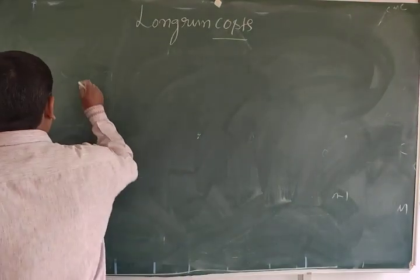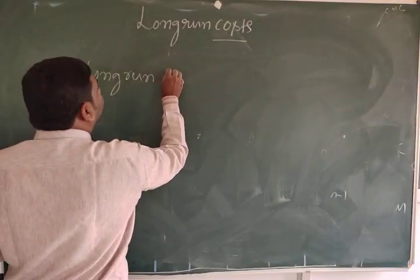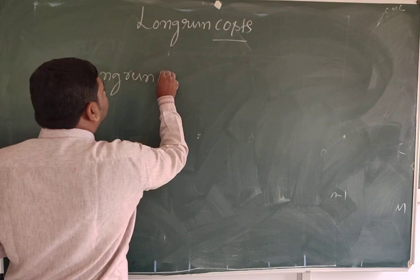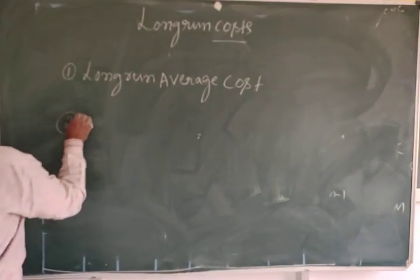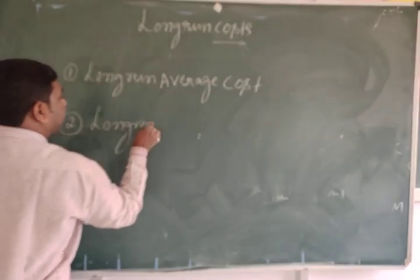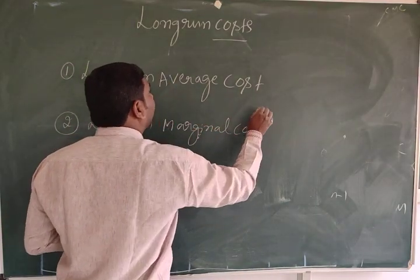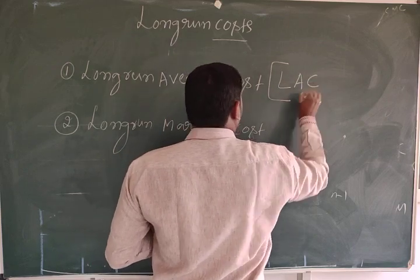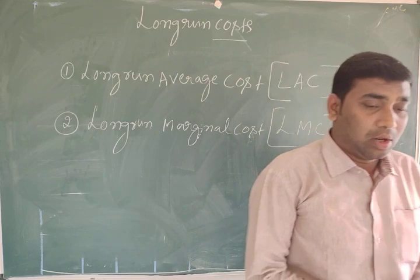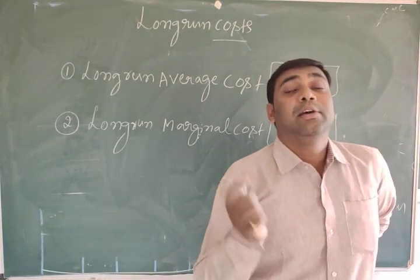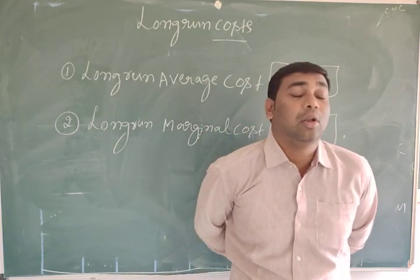In the long-run we can see two types of cost: one is long-run average cost (LAC), and another one is long-run marginal cost (LMC). In the long-run there is no fixed factor — everything is completely variable factors — that's why there is no fixed cost; it is entirely variable cost.